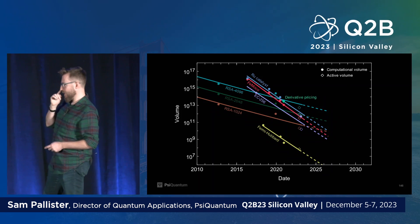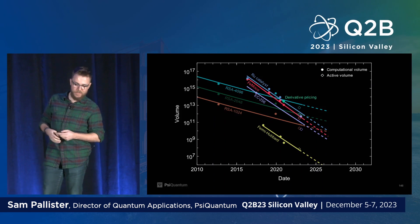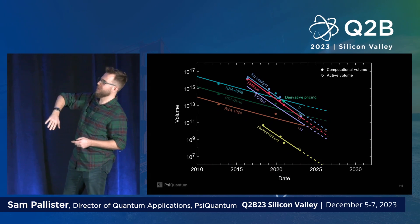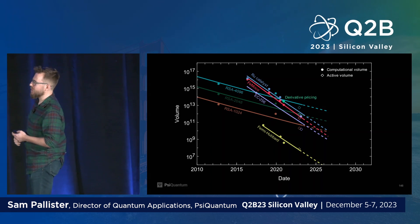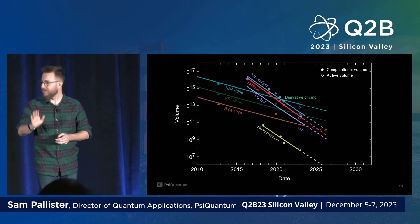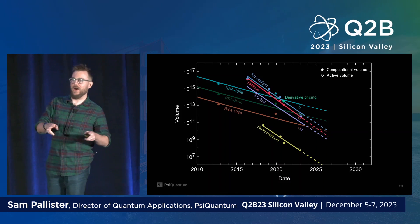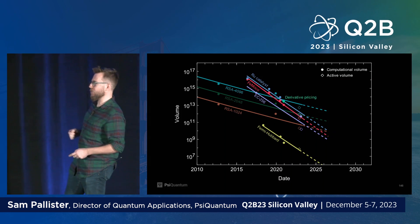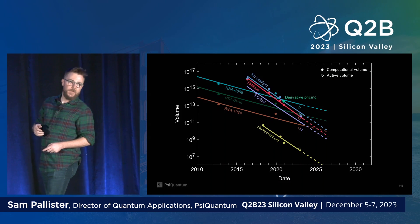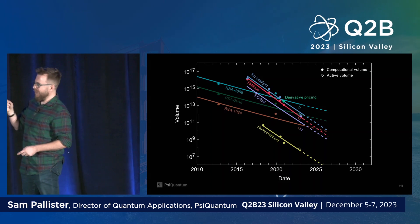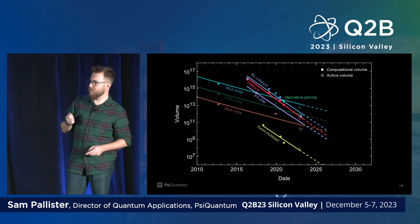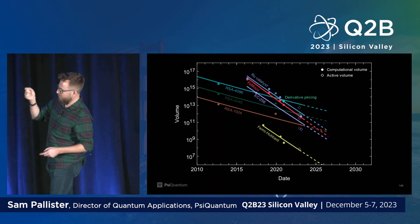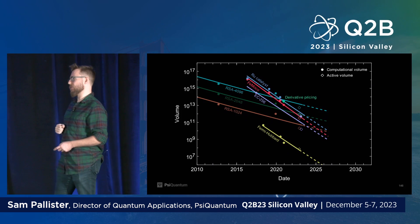We are increasingly confident in our ability to run useful applications on machines of that scale. This plot shows a smattering of quantum algorithms that have been explicitly compiled, plotted against computational volume — the product of the number of logical qubits with the number of logical operations, in this case Toffoli gates, as a function of time. Unlike NISQ, I can be very explicit about resource estimates for fault-tolerant algorithms even in advance of the hardware, with a very minimal error bar.